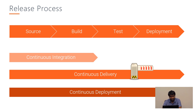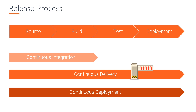When continuous integration, continuous delivery, and continuous deployment come into play, this is how the software release process works. In continuous integration, we don't usually do deployments — we just get the source code and build, and see if the build is passing. There can be several developers working on a central repository, working on different features, and we want to integrate continuously. The more often we integrate, the less difficult it becomes.